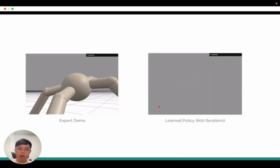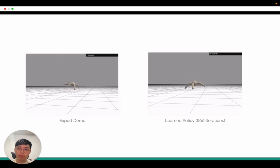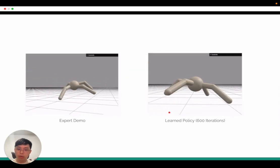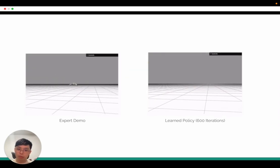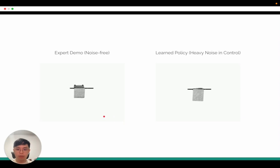Here we show some of the demo. Only about 600 iterations, our policy can learn to drive the ant robot to walk. On the left, this is the expert demo. And on the right, we learn a policy that successfully mimics the task.